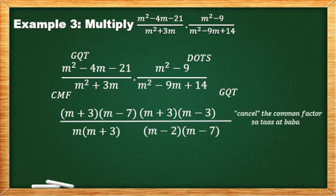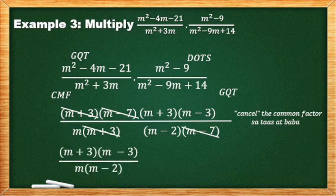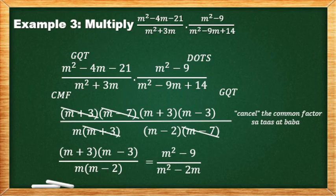Maka-cancel natin yung (m+3) and (m−7). Wala natin ibang makakancel. So, meron tayong (m+3)(m−3) all over m(m−2). Simplify natin ito — dapat naka-product form. So, the final answer is (m²−9)/(m²−2m).